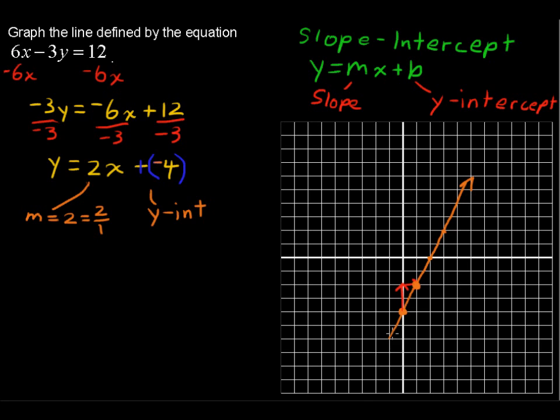And then just draw a line through those points. We'll put an arrow on the ends of that line so we know that the line goes on forever. And that is the graph of this linear equation.